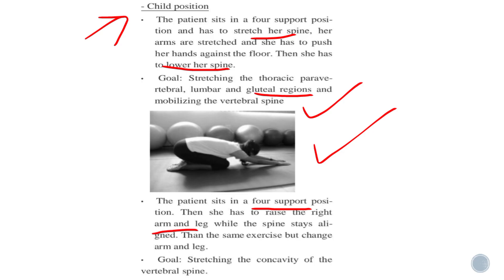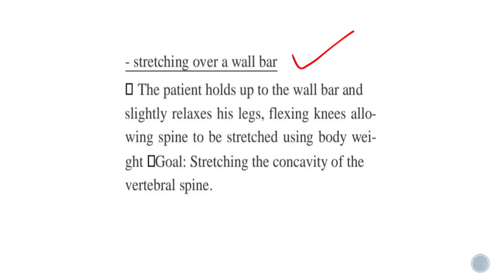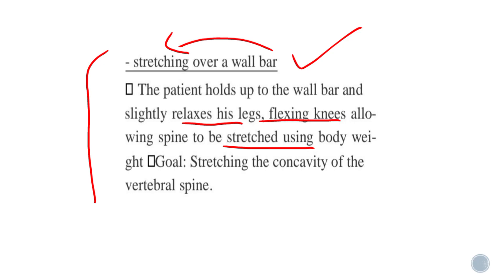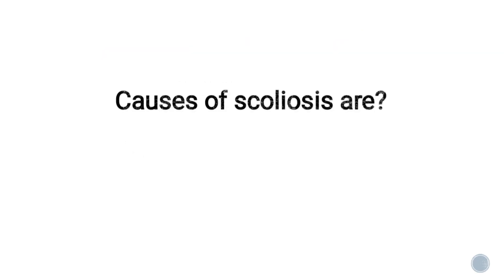The patient in a four-point position raises the right arm and leg while keeping the spine aligned, then repeats on the left side. The goal is to stretch the convexity of the vertebral spine. For the wall bar stretch, the patient holds the wall bar and slightly relaxes, flexing the knees to allow the spine to be stretched using body weight. The goal is again to stretch the convexity of the vertebral spine.